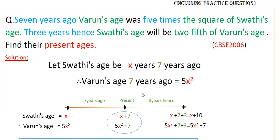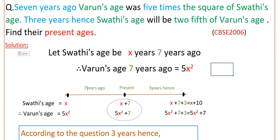As you can see from this figure, 7 years ago Swathi's age was X years and Varun's age was 5X squared. So the present age is X plus 7, because 7 years ago means it is 7 years before the present. So Swathi's present age is X plus 7 and Varun's present age is 5X squared plus 7.